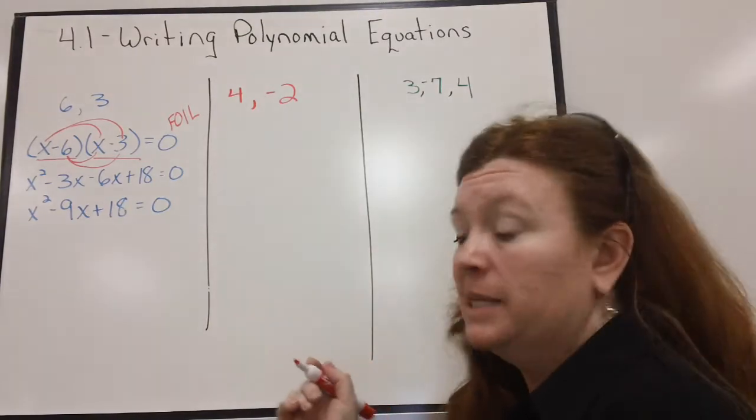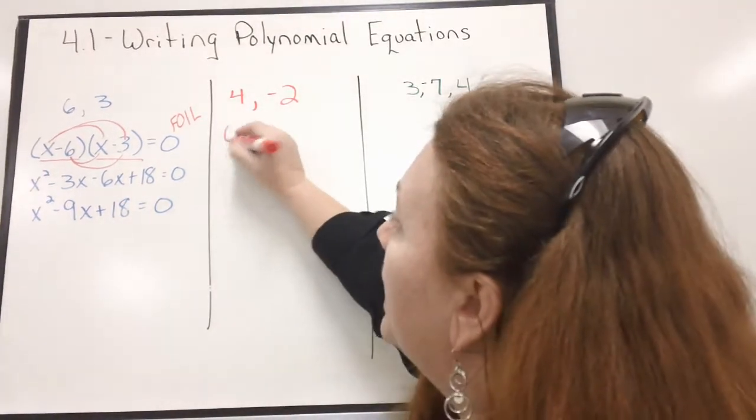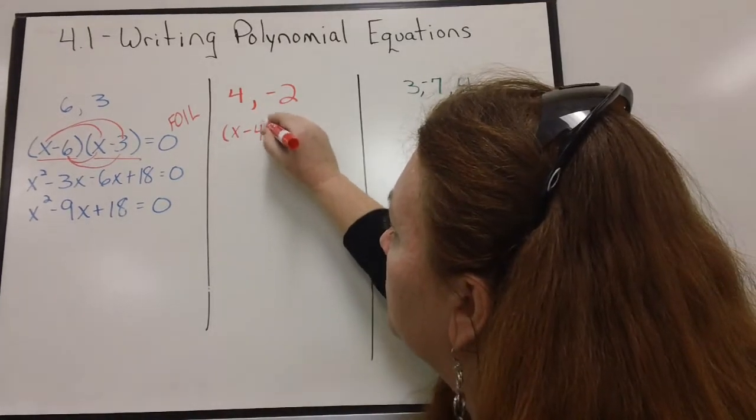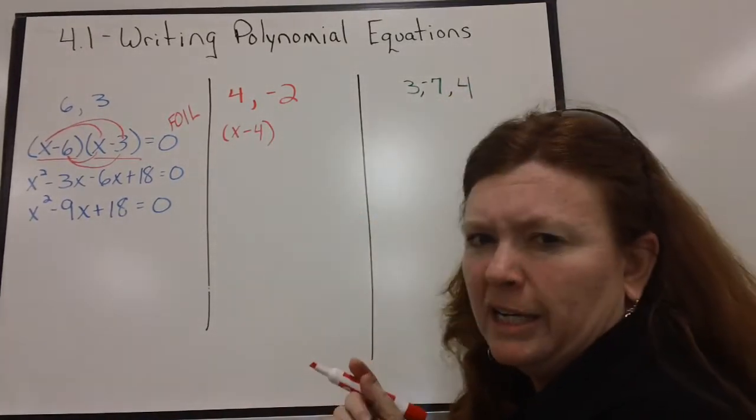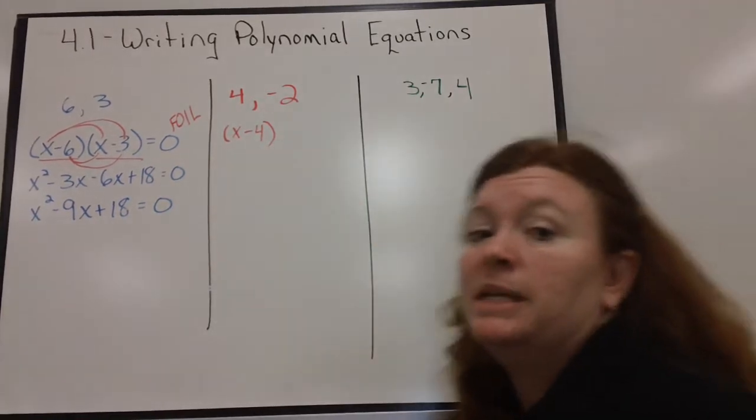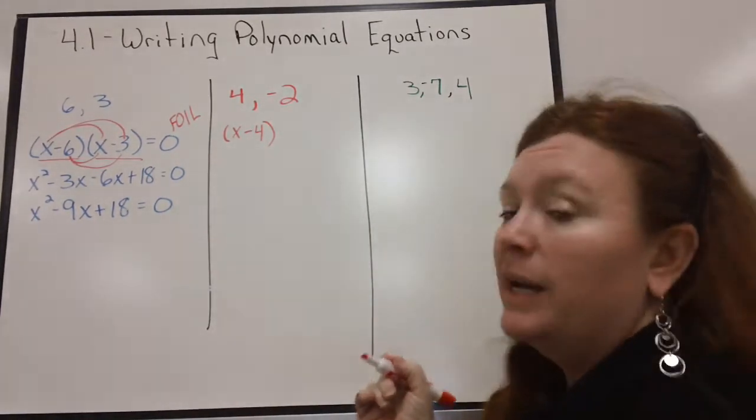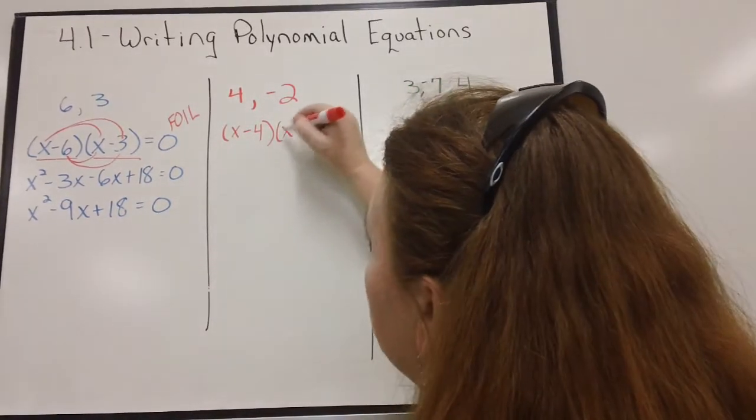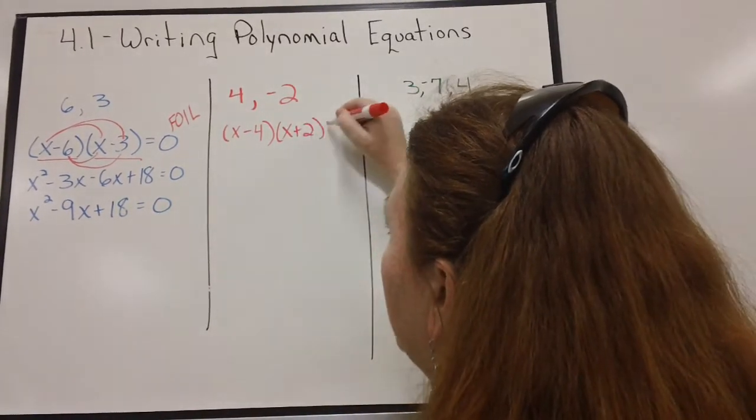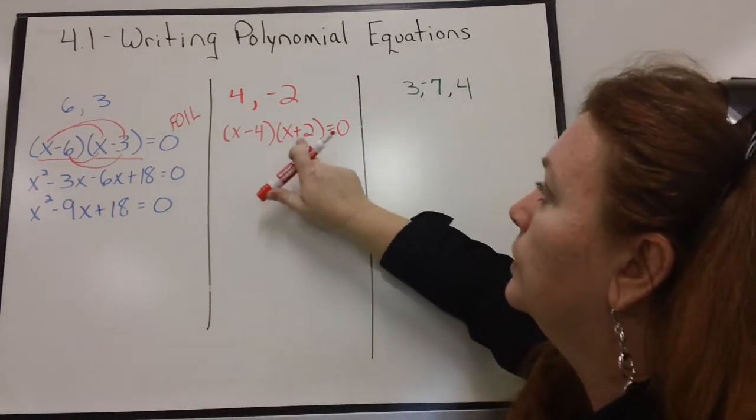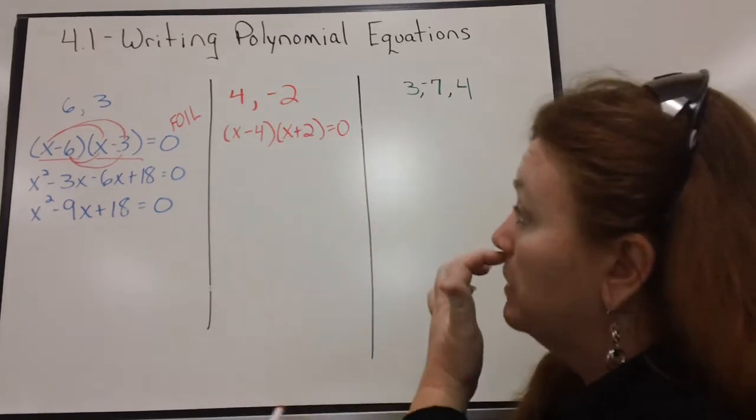4 and negative 2 are my solutions. So, in factored form, that must have been X minus 4. Remember, change the sign. Why did I change the sign? Because 4 minus 4 gives me 0. Now, how would I have gotten a negative 2 as a solution? Well, change the sign. And I have X plus 2. Think about it. Negative 2 plus 2 is 0. So that works.